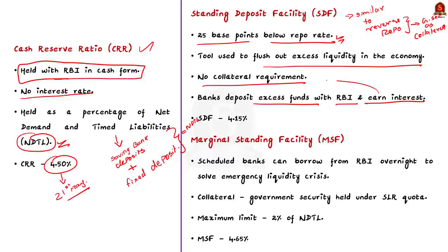SDF was introduced to solve the problem with collaterals. Sometimes collaterals became a constraining factor when the RBI ran out of securities to absorb liquidity under the reverse repo window. To solve this problem, SDF was introduced. After this, RBI can absorb surplus funds from banks without collateral.